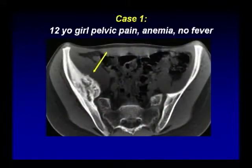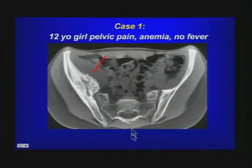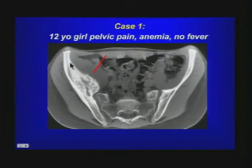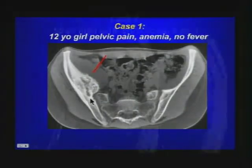Before we get started in detail and look at the different aspects of musculoskeletal infections, I want to show you cases. The first case is a 12-year-old girl with pelvic pain. On these CT images, there's a focal lesion in the right ilium with periostal bone formation — a mixed osteoplastic lytic lesion located at the ilium in close proximity to the SI joint.